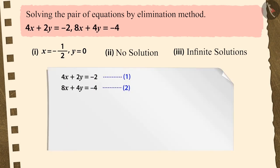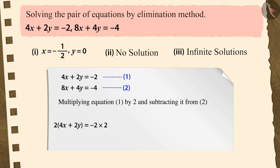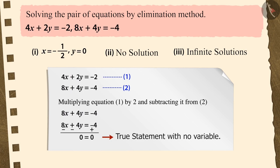In the given pair of linear equations, in order to eliminate one variable, when we multiply equation 1 by 2 and subtract it from equation 2, we get an equation with no variable.